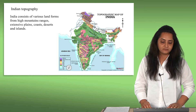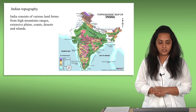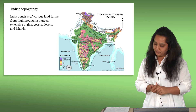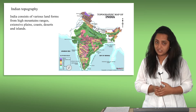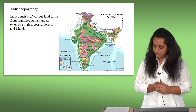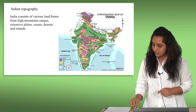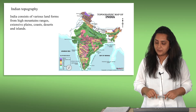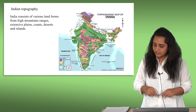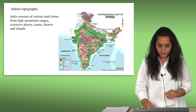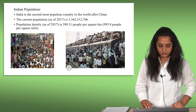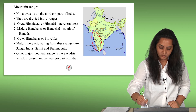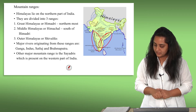Let's talk about the Indian topography. India consists of various landforms — high mountain ranges, extensive plains, coasts, deserts, and islands. Besides the mainland, there are two groups of islands: the Lakshadweep in the Arabian Sea and the Andaman and Nicobar Islands in the Bay of Bengal. India has a long coastline of 7,500 kilometers. The major Himalayan ranges are to the north. Other mountain ranges include the Aravallis and the Satpuras. The Western Ghats has the Sayadris, and there are a few ranges on the Eastern Ghats as well.